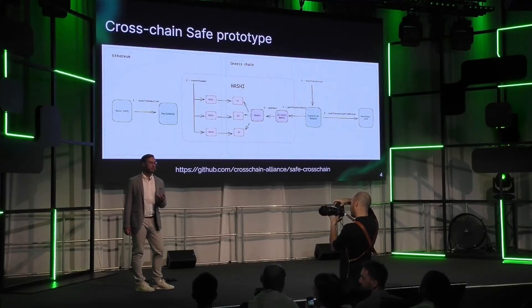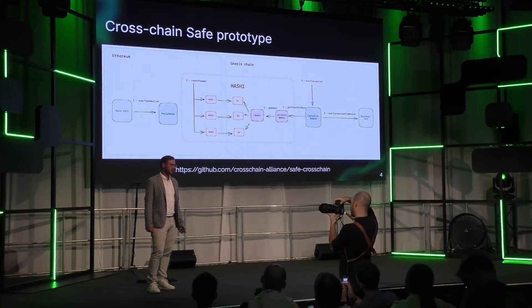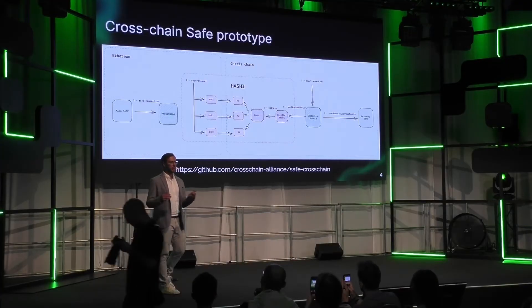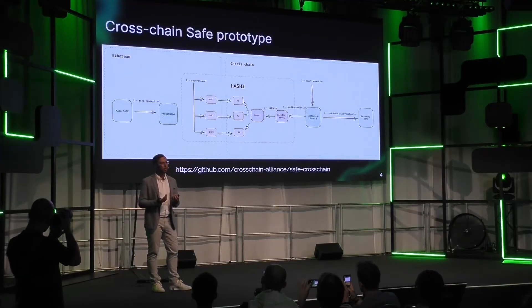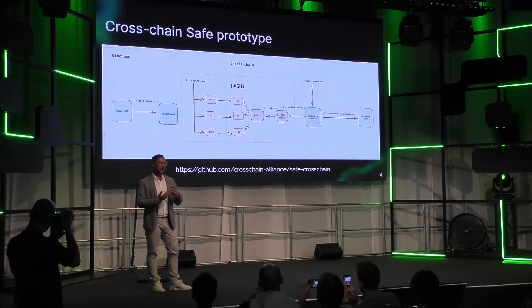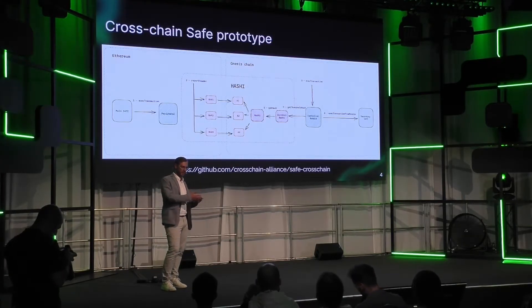How does it work? Assume you have a Safe on Ethereum mainnet and some child Safes on different chains — for example, a secondary Safe on a gnosis chain. In that case, you need to send a message across chains to propagate your instructions. This is a use case where, for example, a DAO deployed on Ethereum mainnet wants to interact with a secondary Safe via the primary Safe.